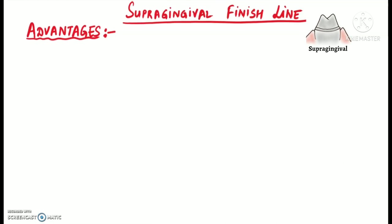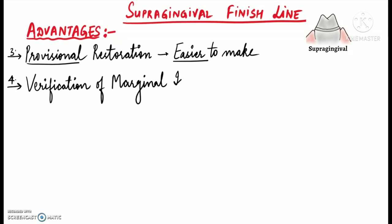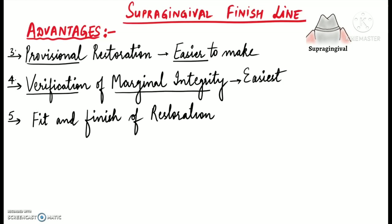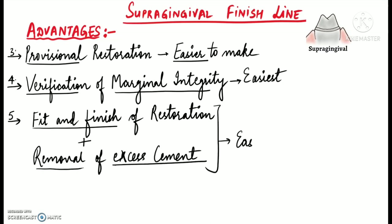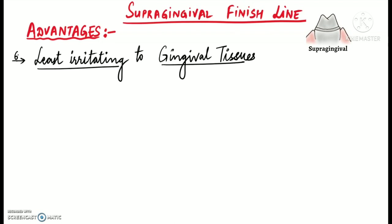Another advantage of supra-gingival finish lines is that provisional or temporary restorations are easier to make, and verification of the marginal integrity of the restoration is easiest. Fit and finish of the restoration and removal of excess cement material is also easiest. Supra-gingival finish lines are least irritating to the gingival tissues and can be maintained very easily by the patient.